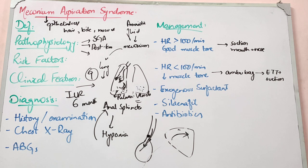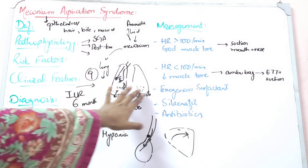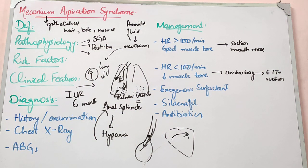Consider this case: a child delivered at home during obstructed labor did not cry after birth. There was a greenish discharge from the mouth, and the child was lethargic and hypotonic. Presenting 3 hours after birth, the child was green and chest X-ray showed patchy infiltrates. This child had aspirated meconium during obstructed labor due to gasping respirations, which then settled in the distal airways causing patchy infiltrates.